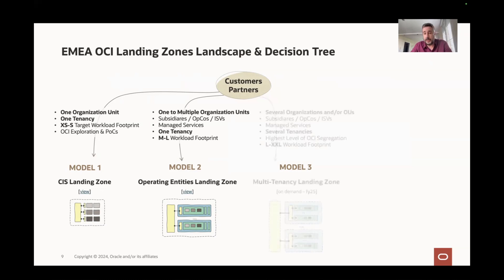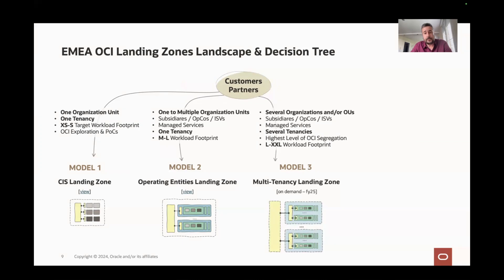When model two is not enough, we have the multi-tenancy landing zone. This is designed for several organizations and their organization units. It can hold all subsidiaries, operating companies, and managed services. The difference is this is done across several tenancies — so this is the highest level of segregation and can hold the largest workload footprint.